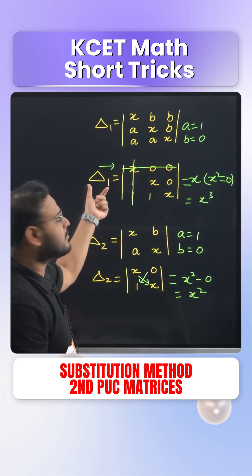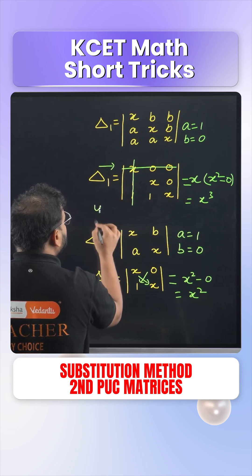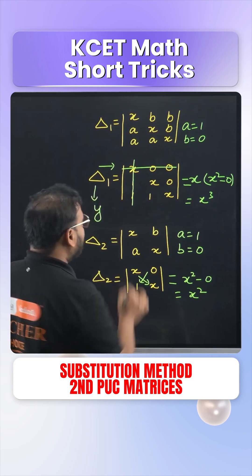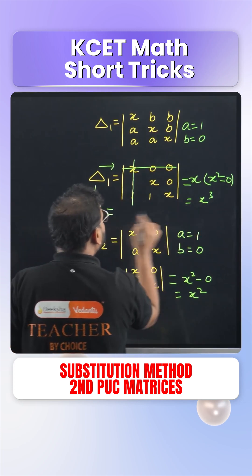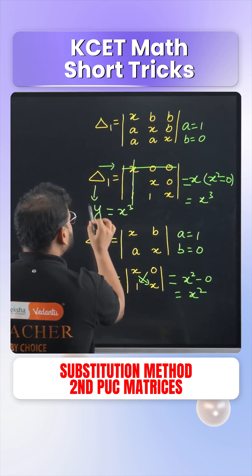Next step is to take the determinant 1 as a variable. We're trying to make a subject over here. So I'll assume this to be a variable Y. So this Y is coming equal to X cube. Y equals X cube.